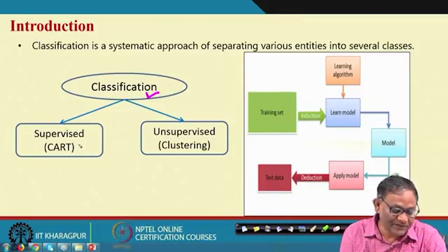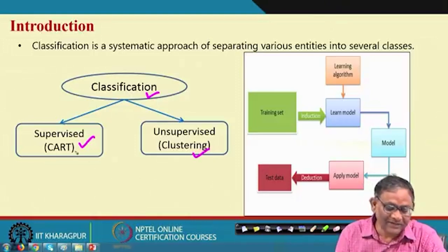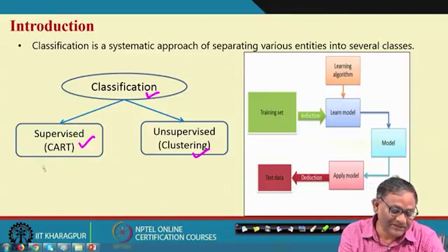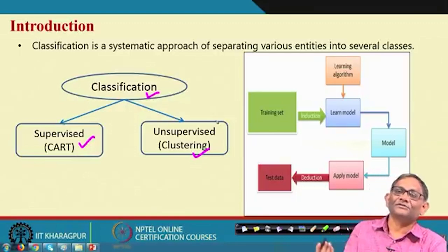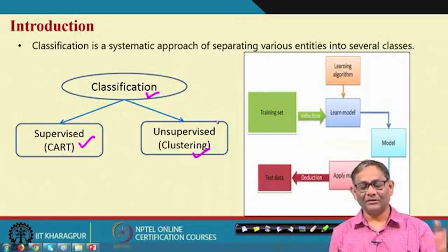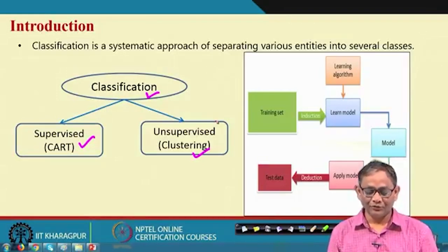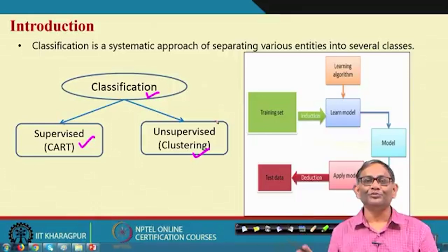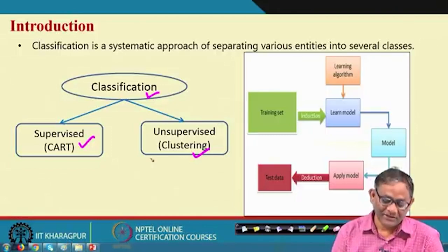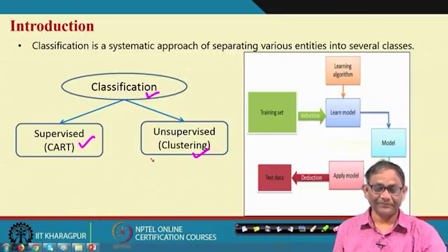Classification has two different types: supervised and unsupervised. When you know the classes — for example, defaulter or not defaulter for a bank, or grave situation versus normal for an accident — it is supervised classification. In some cases classes are not known, but there are many features or characteristics of interest. In such cases you go for unsupervised methods like clustering, and then after seeing the features you name the clusters.